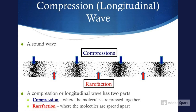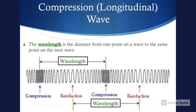The compressions are in blue and the rarefactions are in red. The wavelength in a compression wave is the distance from one point on a wave to the same point on the next wave. You can have a wavelength from compression to compression, or from rarefaction to rarefaction, as shown in green.